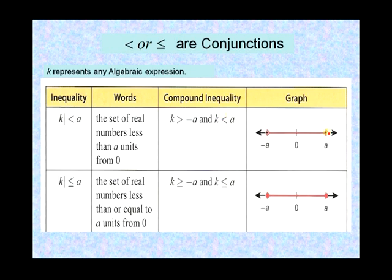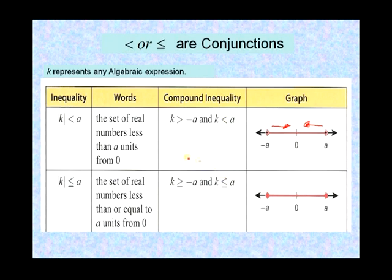Here's what the graph looks like: k is less than a, so everything less than a. And k is greater than negative a, so everything from negative a going right, up to a. The open circles mean we do not include negative a or a, because it's strictly less than — not less than or equal to. If it were less than or equal to, the circles would be filled in — that's the only difference.